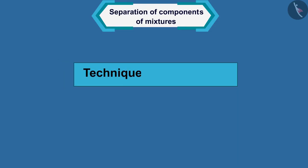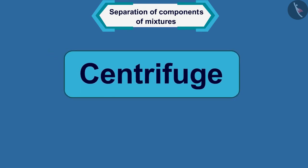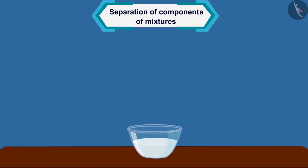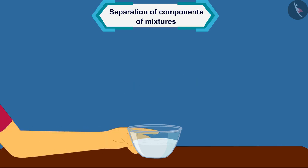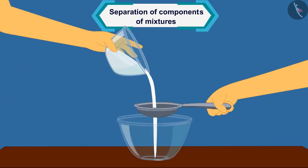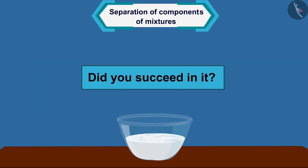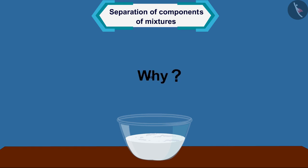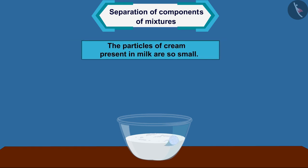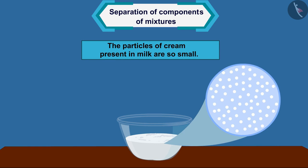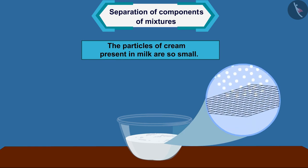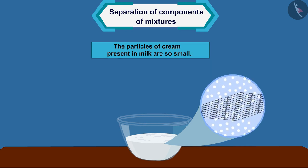Let us now learn about the second technique of separation: Centrifuge. Take milk with a little bit of whole cream in a vessel. Now, try to separate the cream from milk by filtering it with a sieve. Did you succeed? No. Why so? In fact, the particles of cream present in milk are so small that they come out of the filter container.